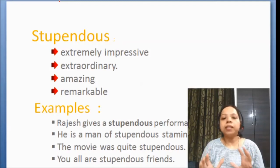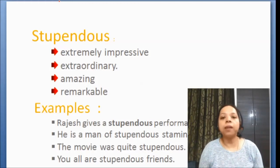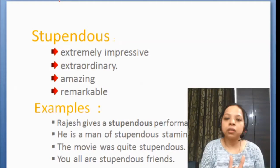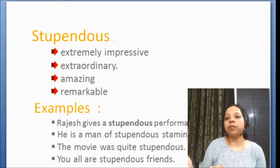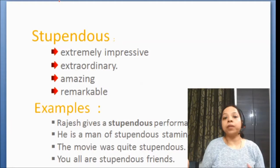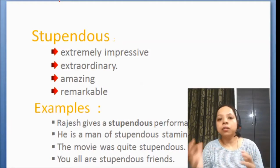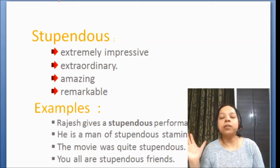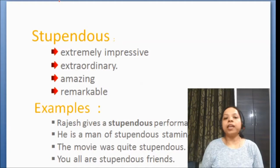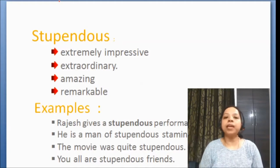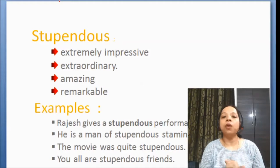Stupendous means extremely impressive — bohut, bohut zaadha impressed karna wala ki aapne kuch bohut achha kaam kiya hai. So instead of saying 'extremely impressive' or 'you have done something very impressive,' we will say 'this is stupendous' or 'you have done really stupendous work.' So instead of saying extremely impressive, extraordinary, amazing, remarkable, we will use the word stupendous for a little more fancy English.